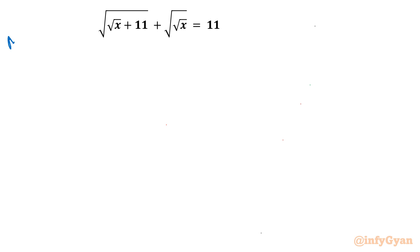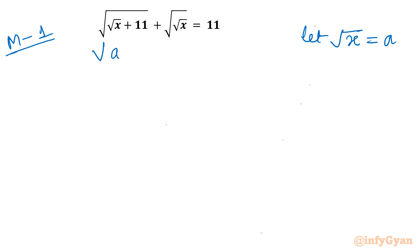I will demonstrate three different methods. Method number 1 is called the method of rationalization. Let us first consider square root of x equal to a, so our equation converts to: square root of (a plus 11) plus square root of a equals 11.